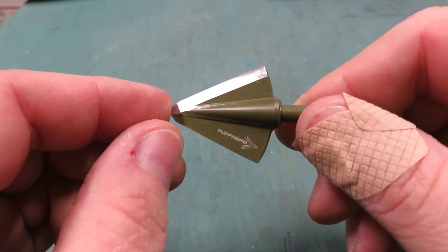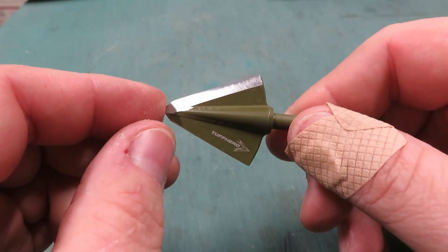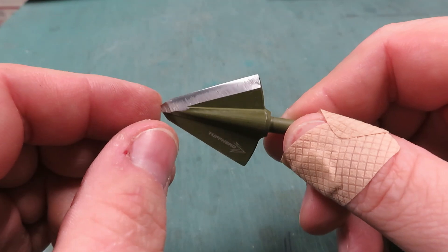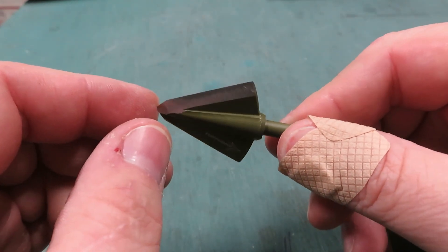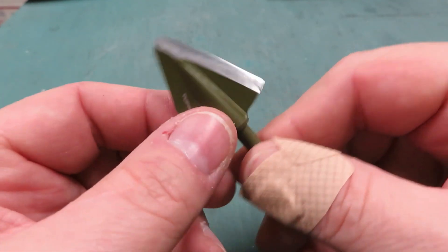This is Ron again from Stay Sharp. In this video we're going to be doing a sharpness evaluation and sharpening of a Toughhead single bevel. This is a 200 grain Toughhead.